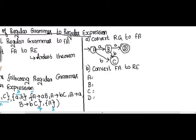For state A, I check whether any input comes into state A. There is no input coming into state A, so it is null. Since A is the initial state, I write only null. For state B, only one input comes in — from state A with input 'a'. For state C, two inputs come from different states: one from state A with input 'b', and another from state B with input 'b'. For state D, only one input comes from state B with input 'a'.